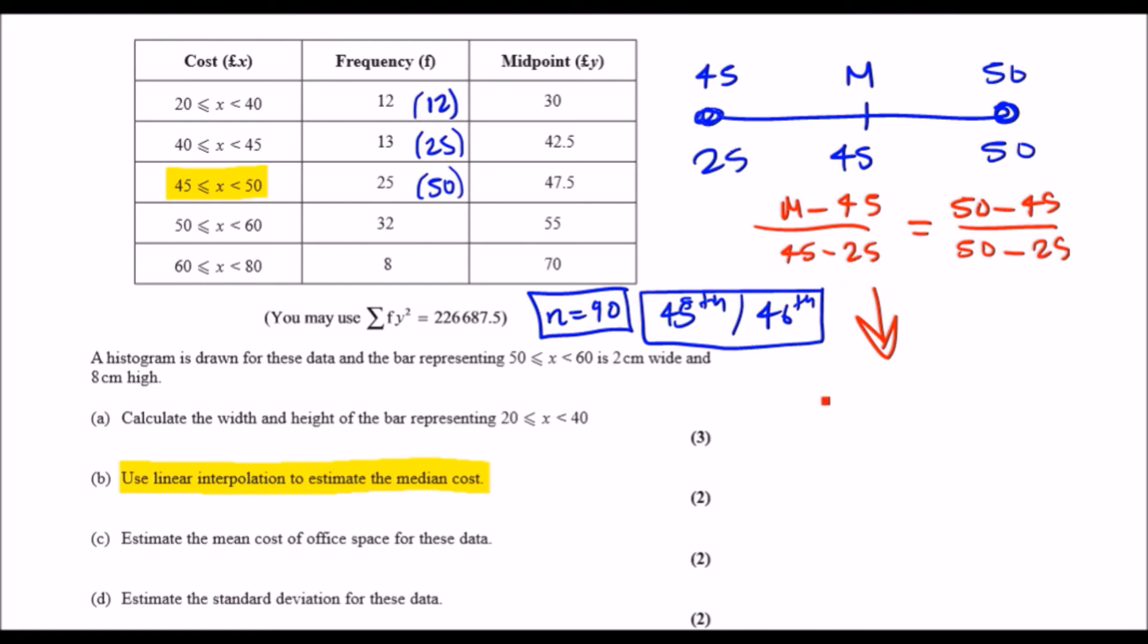Resolving this one, you get m minus 45 over 20 equals 5 over 25. Times 20 across and add 45. Let's see what we get: 25 times 20 add 45, and I got exactly 49. So m equals 49.